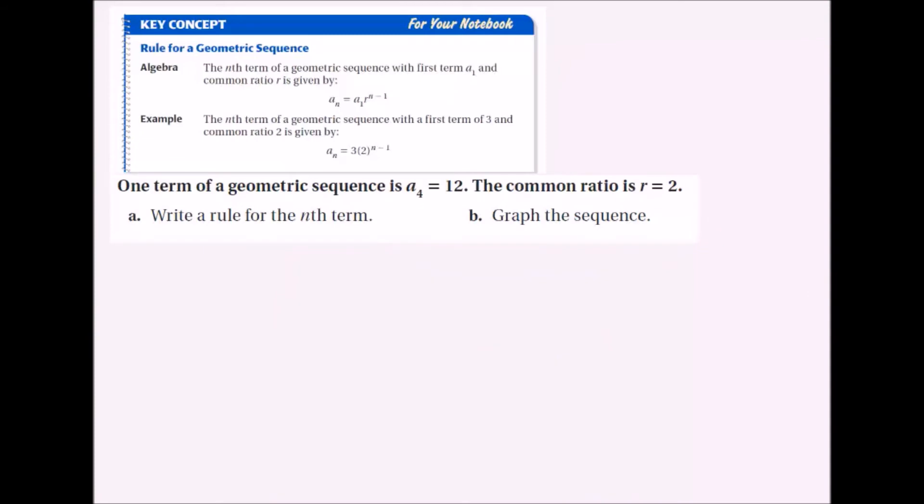So it's really nice when you know the first term and you know the ratio, because then you can just plug it directly into this formula with the first term and the ratio. But sometimes they don't tell you the first term. Like here they're telling us the fourth term is 12, a_4 is 12, and the ratio is 2. So we actually need to find the first term if we're going to write a rule.